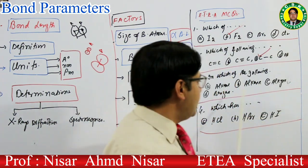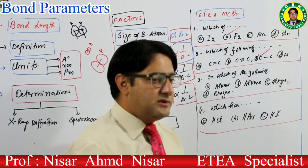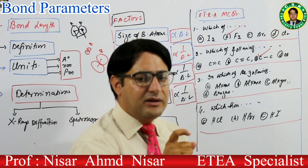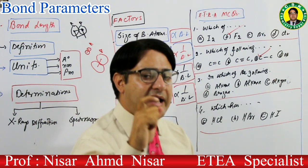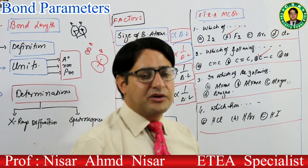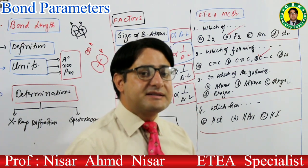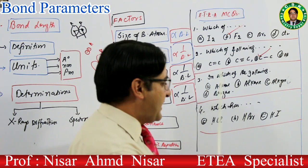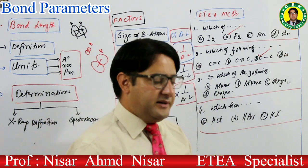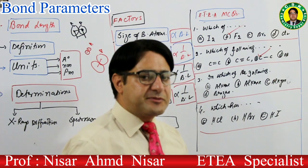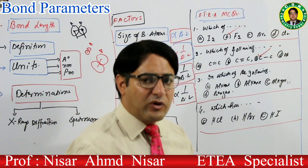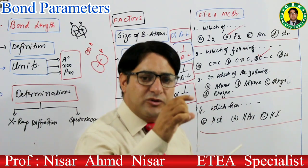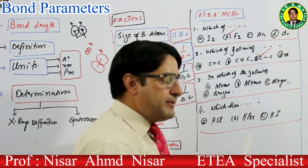MCQ آتا ہے: کس میں carbon-hydrogen bond length زیادہ ہے — alkane، alkene، alkyne، یا benzene؟ Alkane میں carbon sp3 ہوتا ہے اور H کے ساتھ sp3-s overlap سے bond بنتا ہے۔ Alkene میں sp2-s overlap ہوتا ہے۔